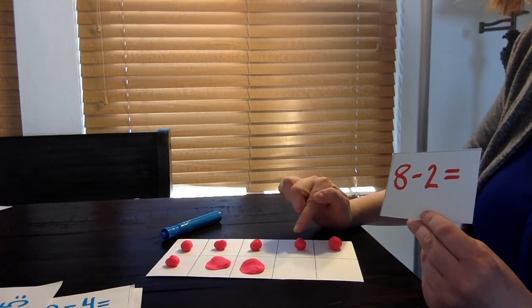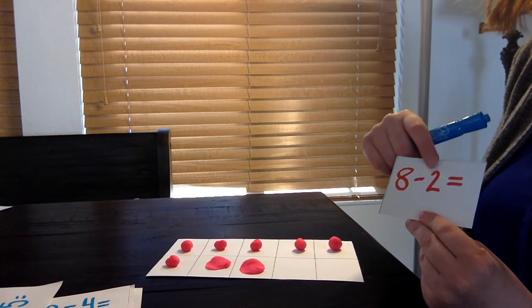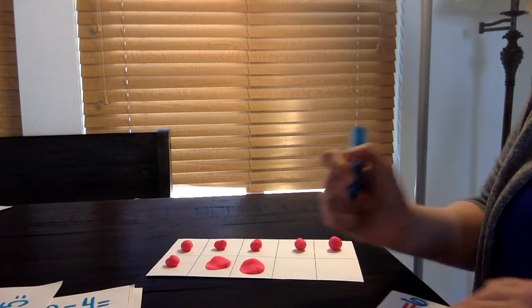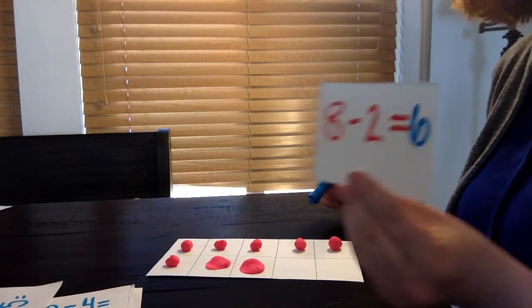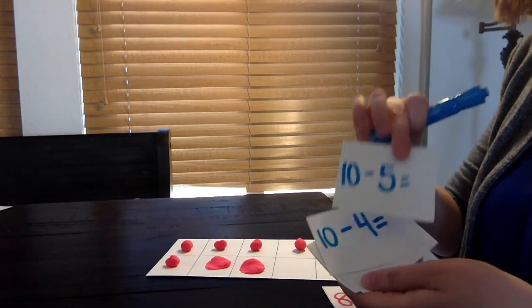I have one, two, three, four, five, six. So I know eight take away two equals six. I can write that on my card or save it for later so you can play this game again. So I have several different cards so I can play it different ways.